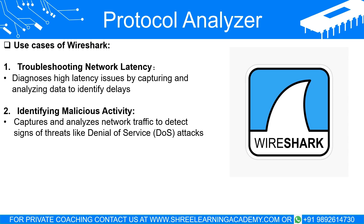One such sign could be an unusually large amount of traffic to or from a particular IP address, which could suggest a denial-of-service attack, where an attacker tries to overload a network or server with traffic in order to render it unavailable. Furthermore, a network analyst could use Wireshark's filtering capabilities to look for specific types of traffic known to be associated with certain cyber threats.